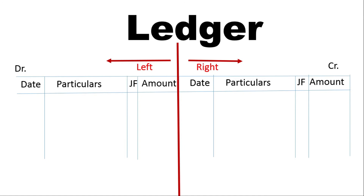A journal entry is a journal entry. If you have a cash account, you write cash account. The journal entry goes to the debit side. We write it on the debit side.